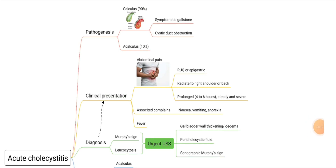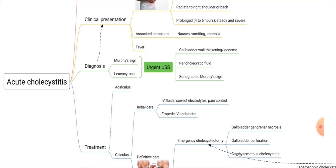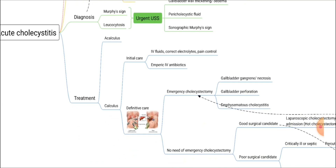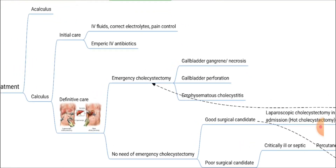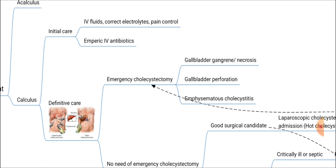Up to now we have discussed the pathogenesis, clinical presentation, and diagnosis of acute cholecystitis. Now we will discuss treatment, focusing mainly on calculous cholecystitis. Initially, you should give IV fluids, correct electrolytes, provide pain control, and start empiric IV antibiotic treatment.